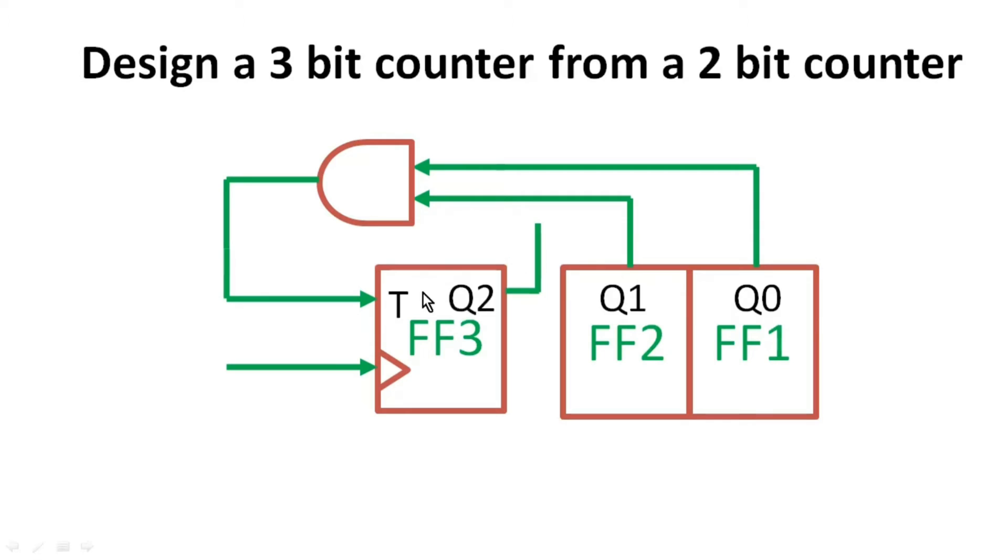And I also have calculated the expression for signal T which is Q1 and Q0. So when Q1 and Q0 both are high, the input to this T flip-flop will be high which will make Q2 toggle. So this is how we get our 3-bit counter from 2-bit counter.